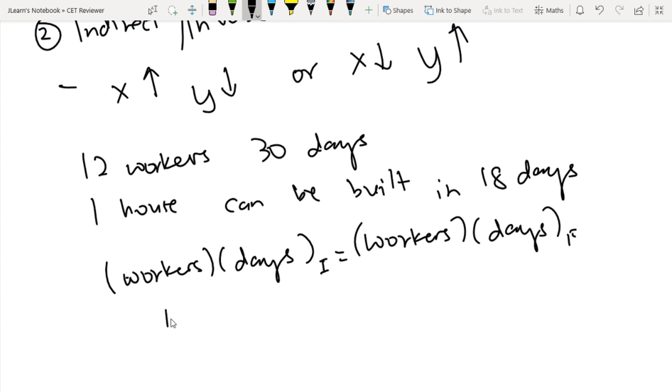So basically, the number of workers times the number of days should be the same for initial and final values. So 12 workers times 30 days will equal x workers times 18 days. Solving this, workers equals 12 times 30 over 18, that is 20 workers.